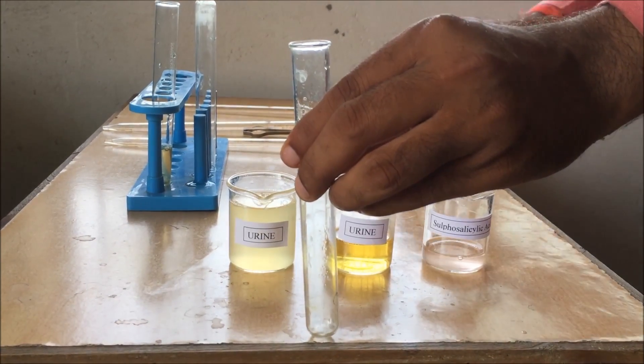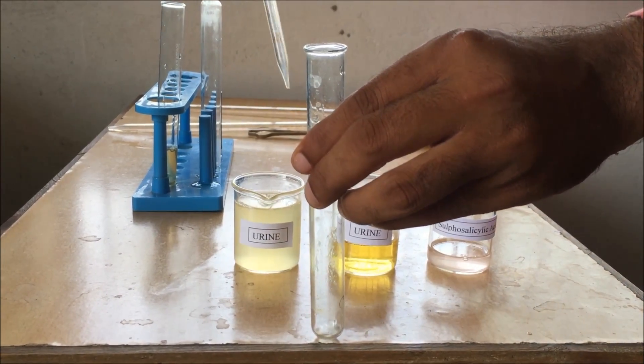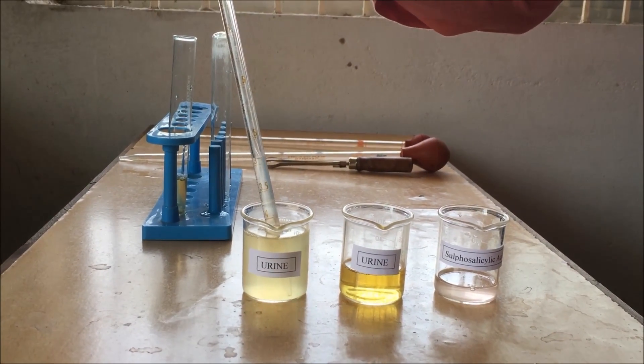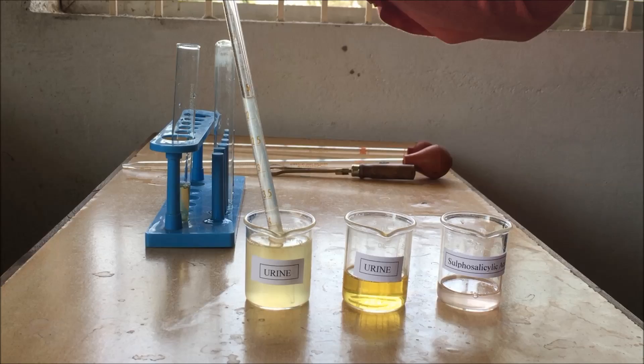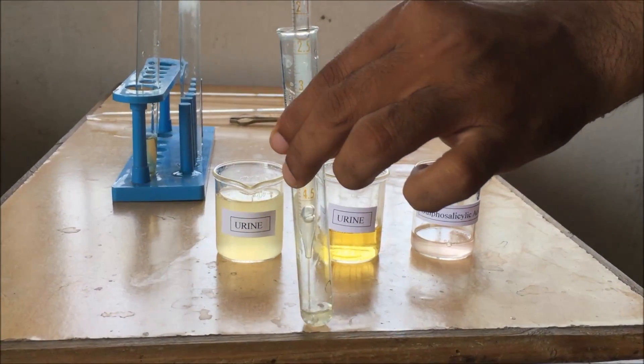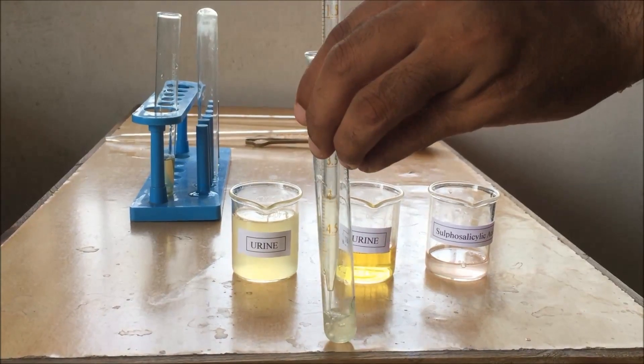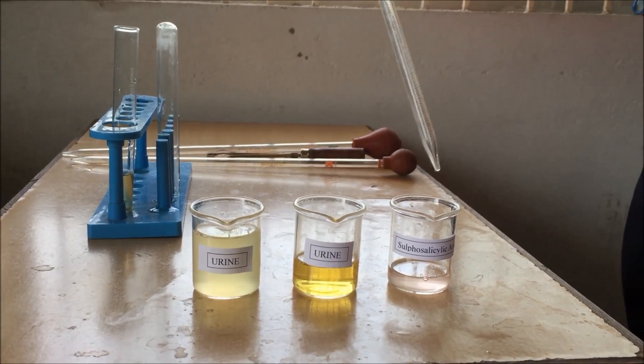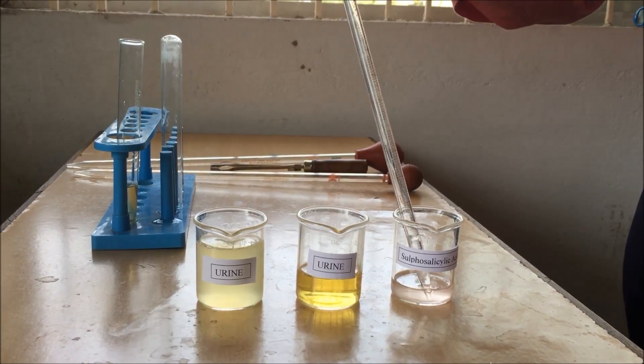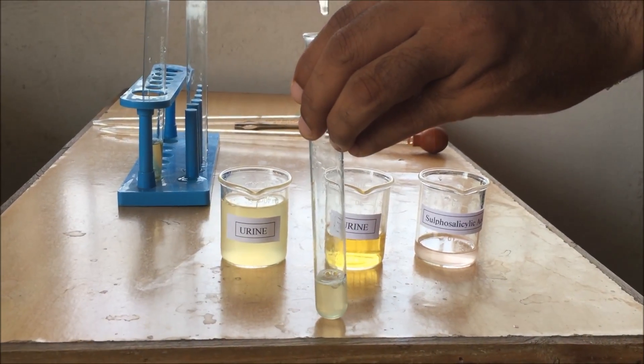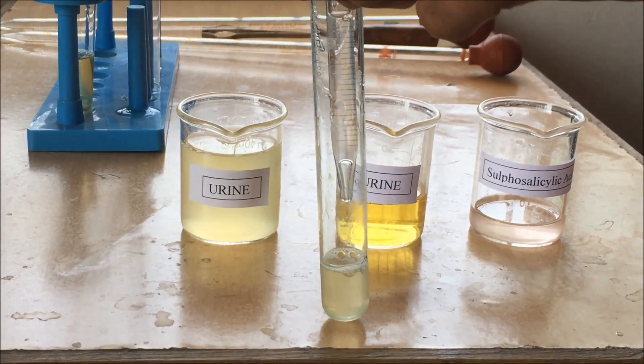Now again, we take a test tube and transfer a small quantity of the urine mixture. It is a mixture of egg albumin, urine, and water. This is a dummy of urine just to explain what will happen if there is albumin in urine. The process is the same. After transferring the dummy mixture of urine, add sulfosalicylic acid dropwise over this sample.